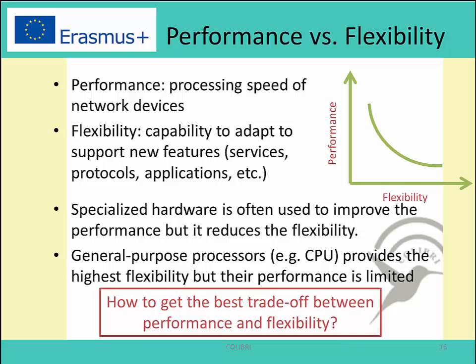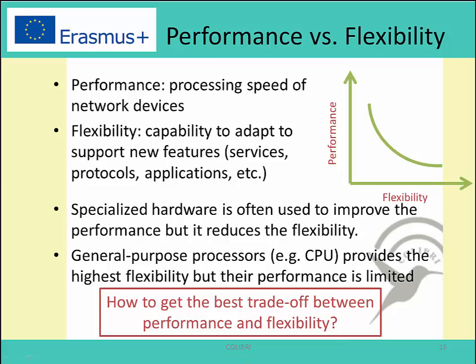The performance represents the processing speed of the network device, while the flexibility represents the capability to adapt to new features like changes in services, applications, and protocols. Obviously, if the network devices are specialized — meaning they are designed specifically for certain tasks — their performance will be much better than a standardized device. However, the flexibility of the specialized device is much lower than the standardized one, since we can't easily add new functions or modify already implemented functions in the specialized hardware.